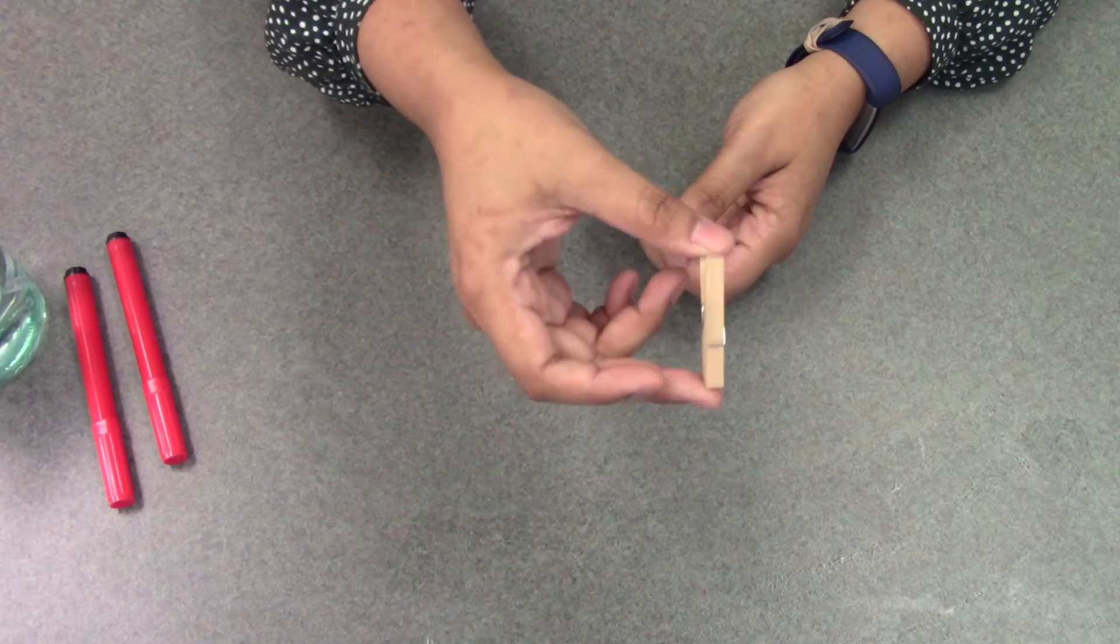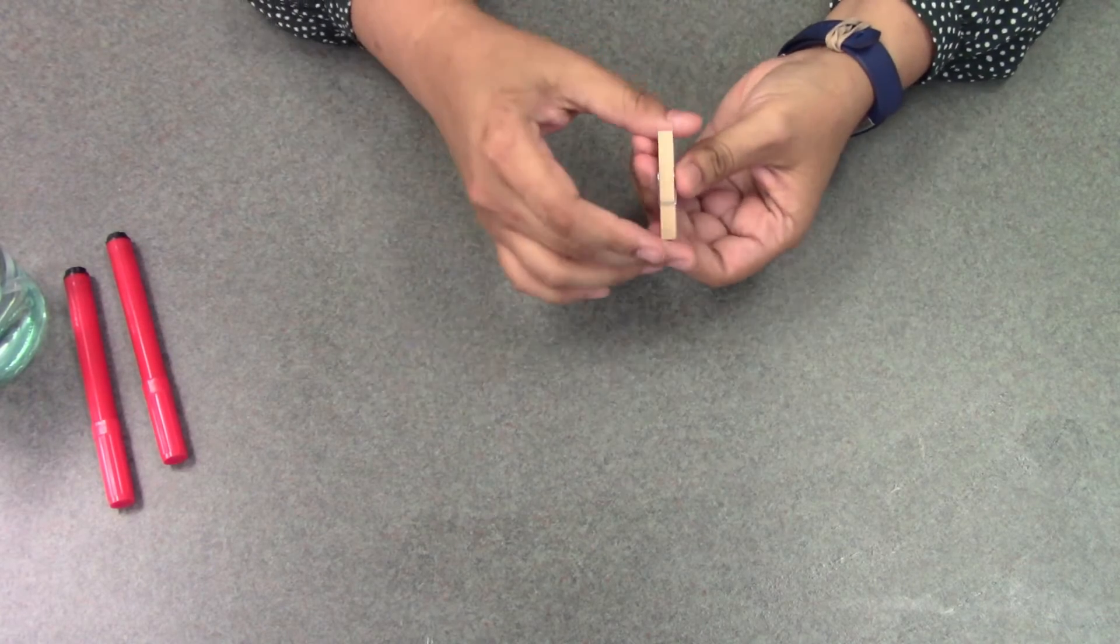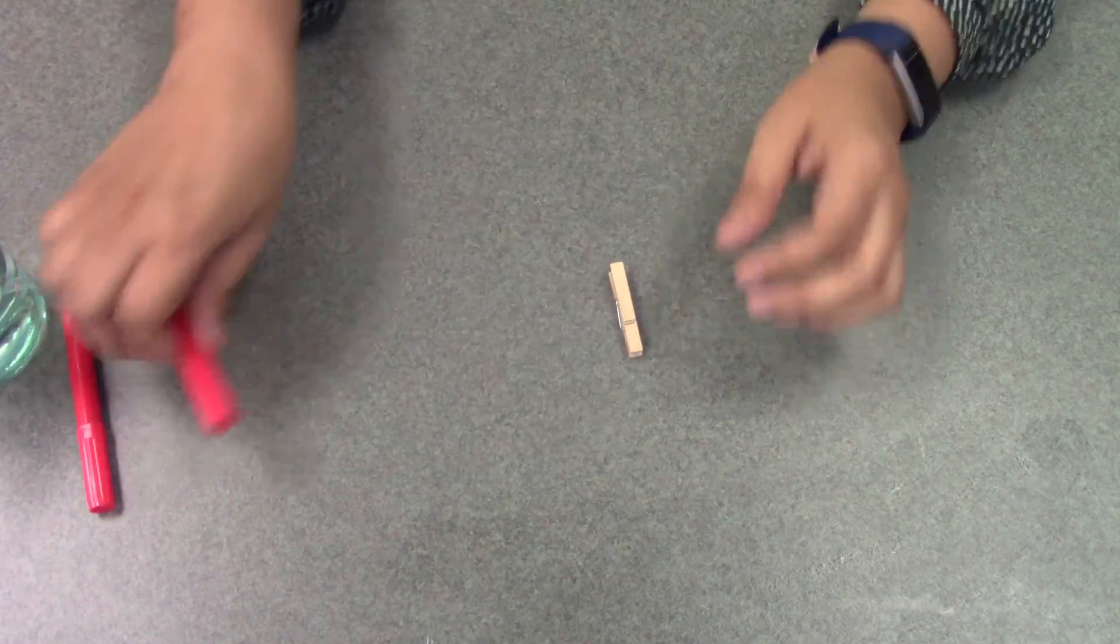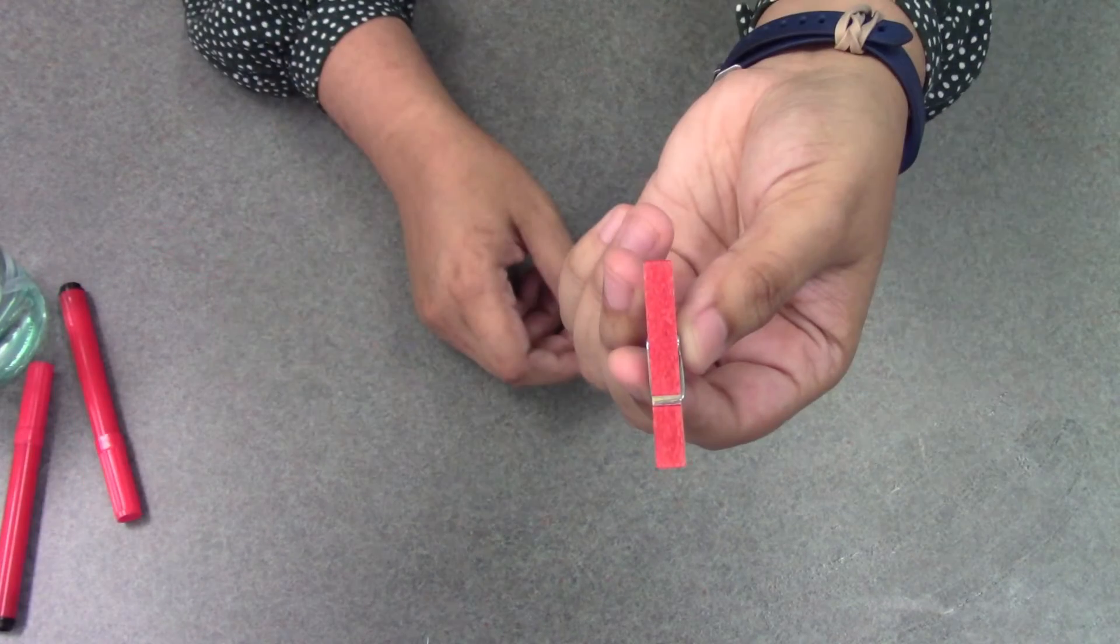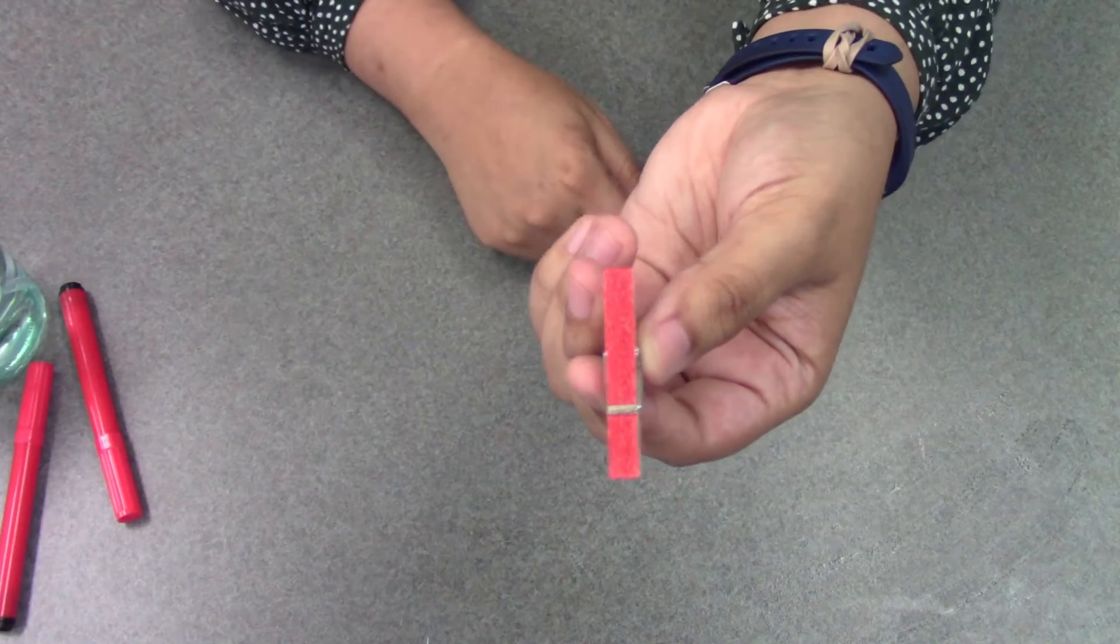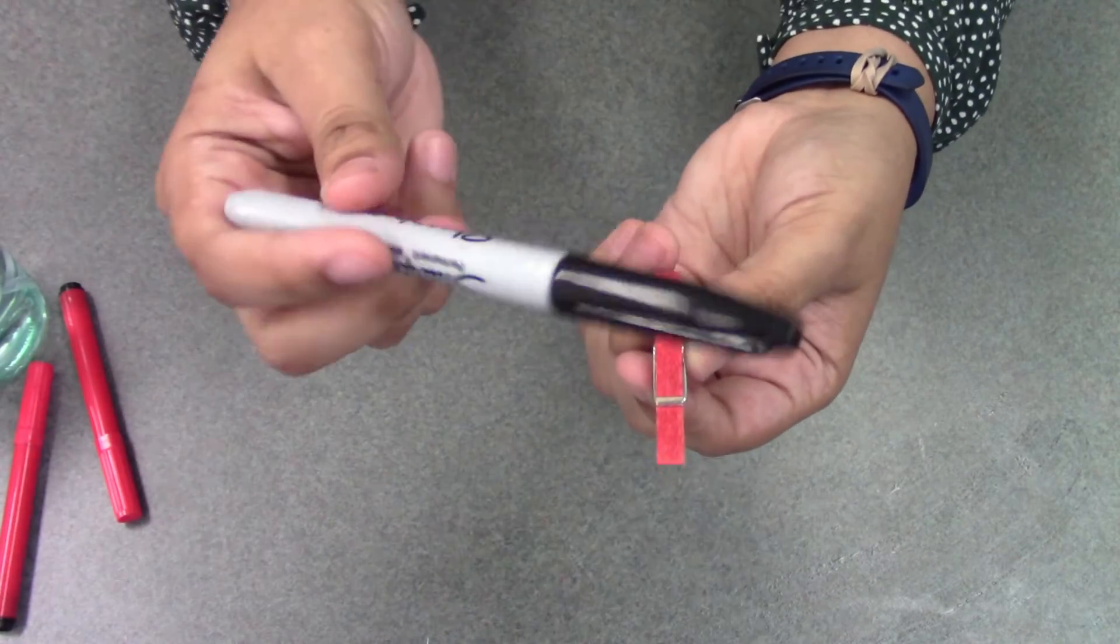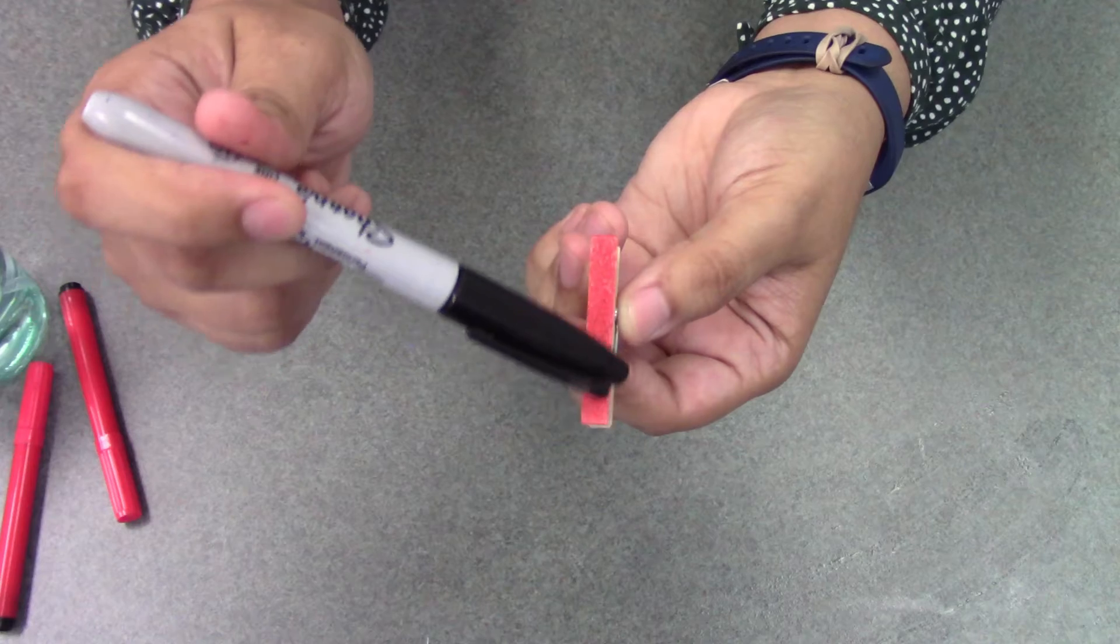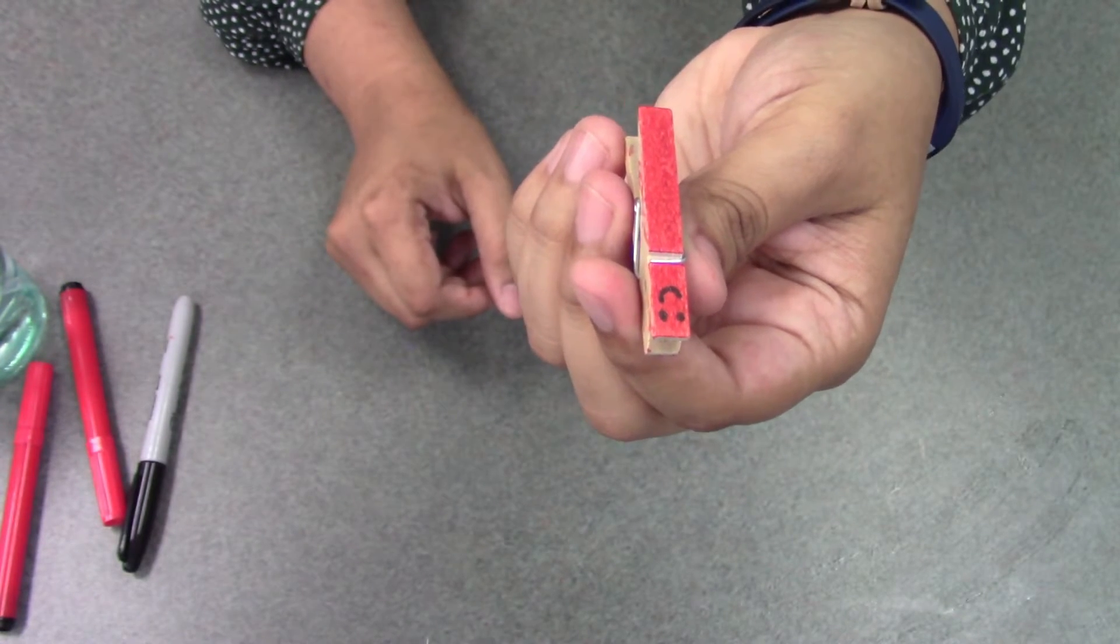So next you're going to take your clothespin, and if you want to, you're going to color in the body of the butterfly. So I'm going to color mine red. So then once it's done, you're going to have the whole side colored in like so. So then you're going to take your black marker and draw the face on the top half here. Alright, so then once you're done, it's just going to look like that. You have a little smiley face on there.